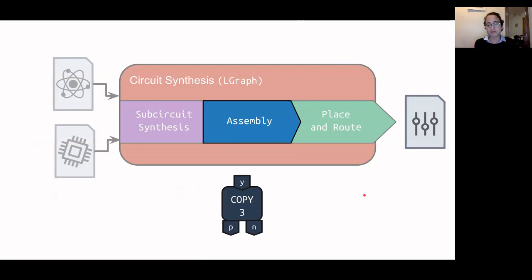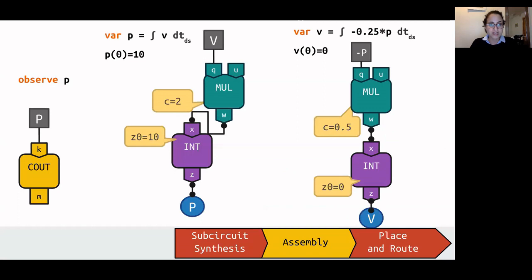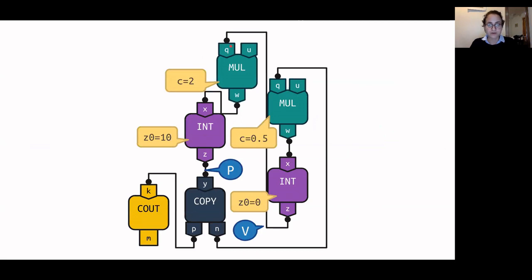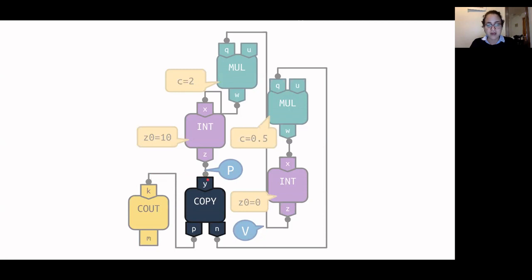Once we have subcircuits implementing each relation, we assemble them together to form the completed circuit. This stage inserts copy blocks as needed to get enough copies of each signal. Connecting the blue circles — where signals are generated — to the gray rectangles — where they are needed — we form the completed circuit with one copy block inserted, because position P is used in two places: in the observed P statement and in the statement modeling the velocity of the harmonic oscillator.